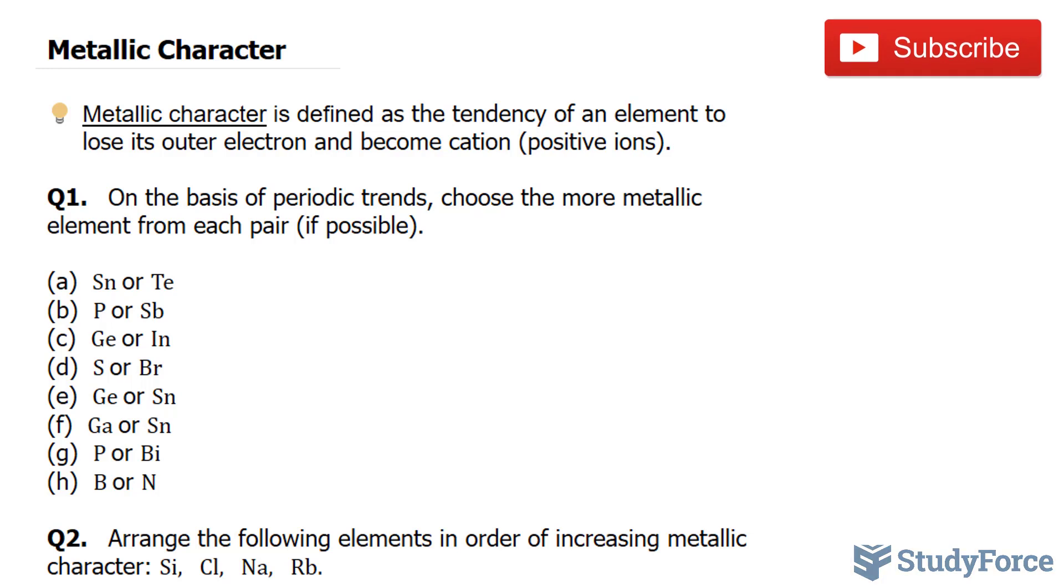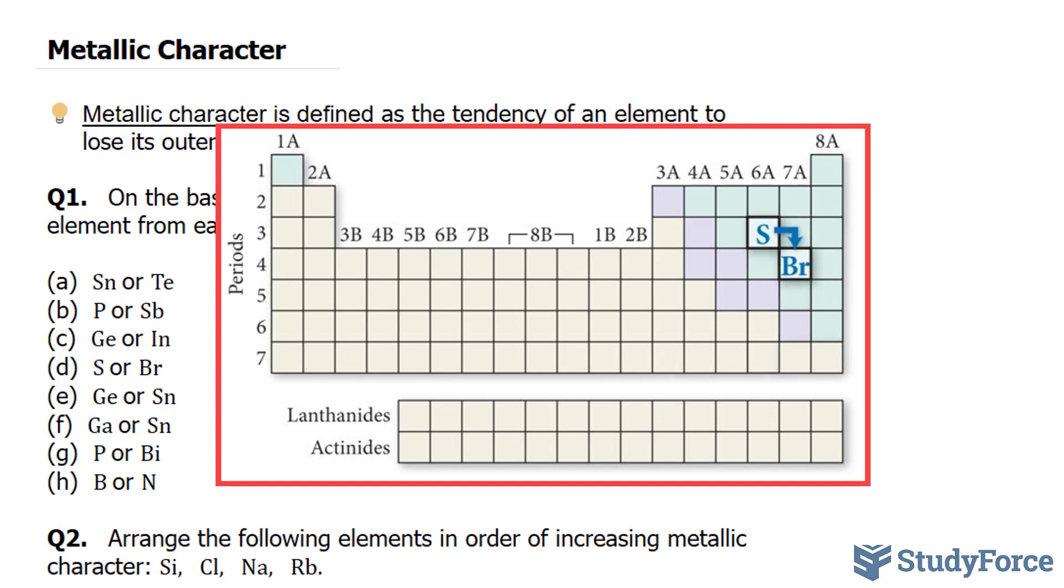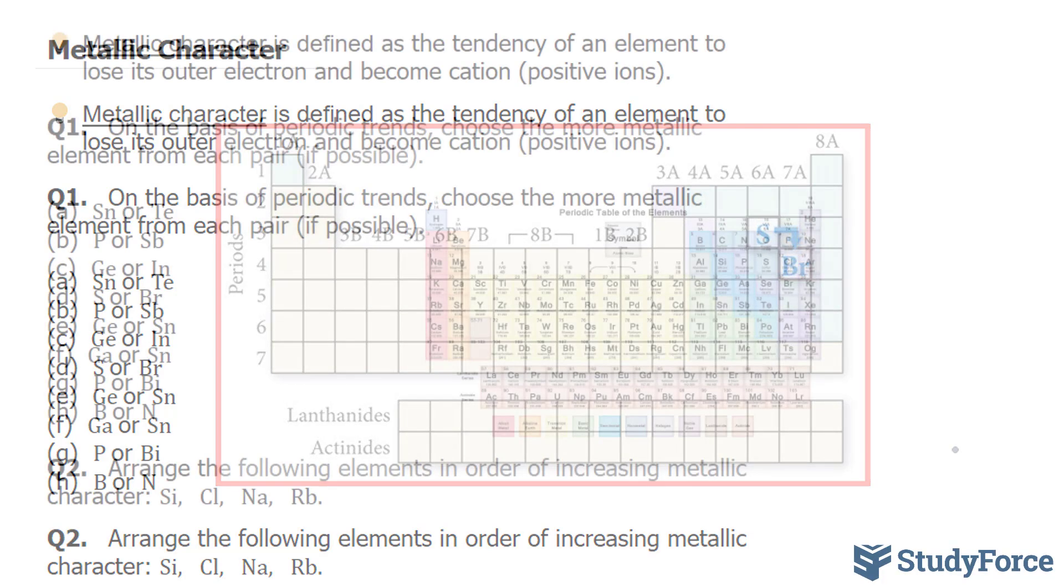In question D, we compare sulfur and bromine. Based on periodic trends alone, you can't tell which is more metallic because bromine is to the right of sulfur and also one row down. These effects tend to oppose each other, and it's impossible to tell based on periodic trends alone which one is more metallic.